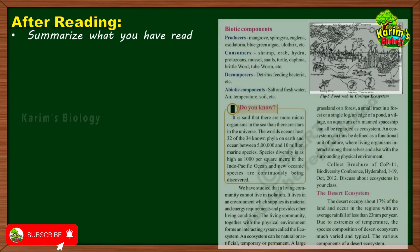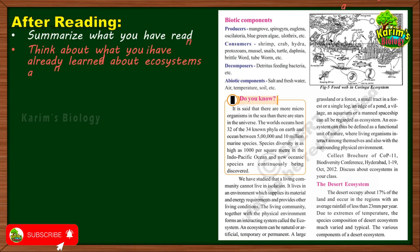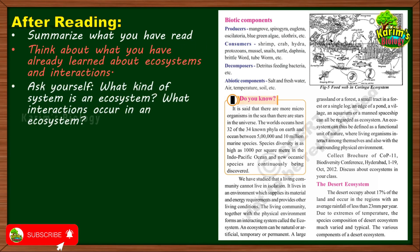After reading, you have to summarize what you have read — recall all the important points you learned. Think about what you have already learned about ecosystems and interactions. Then frame questions yourself and try to answer them; for example, ask yourself 'What kind of system is an ecosystem?' and 'What interactions occur in an ecosystem?' This self-questioning will definitely improve your knowledge.